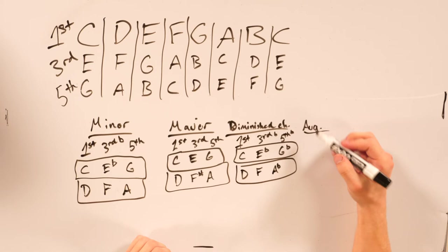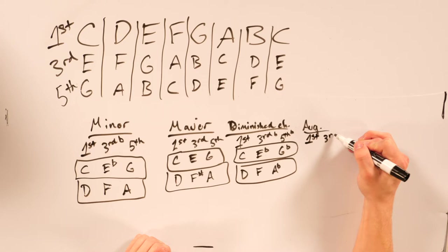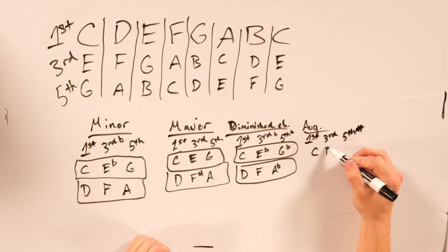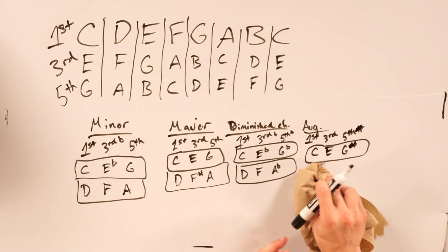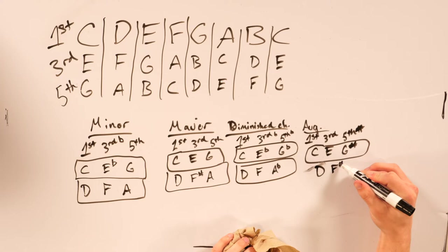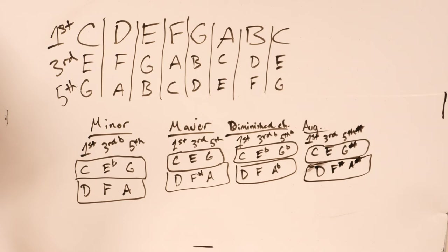And with augmented, it would go first, third would be normal, and fifth would be sharp. So it would be C, E, G sharp. D, F sharp, and A sharp for your augmented D chord.